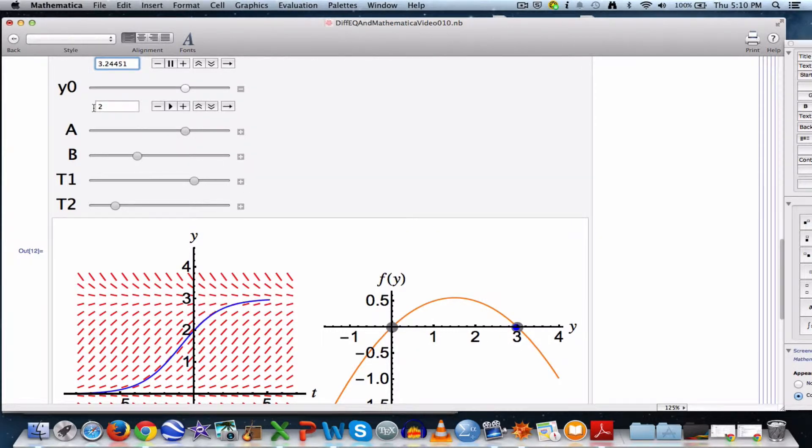They correspond to equilibrium solutions in the slope field. If I set y 0 to be 3, you see a solution curve that's a constant function. Its graph is a horizontal line in the slope field. The slope marks at y equals 3 are all horizontal. In the phase line, the blue dot is staying on top of the gray dot. It's not moving as time goes by. It's stationary. It's an equilibrium point.